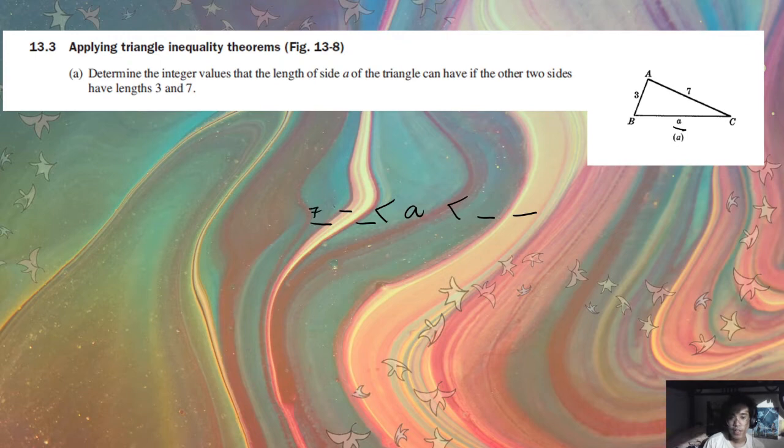So this is going to give us 7 minus 3 and 7 plus 3. And with 7 minus 3, that's 4. And with 7 plus 3, that's 10.